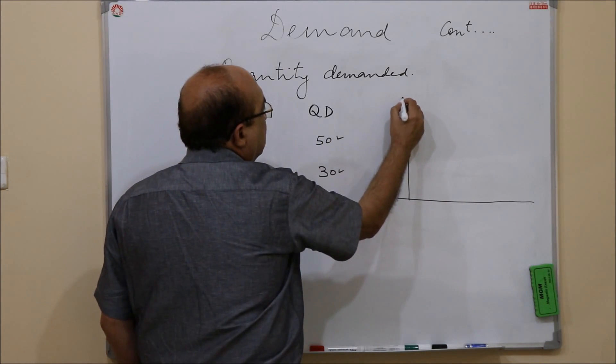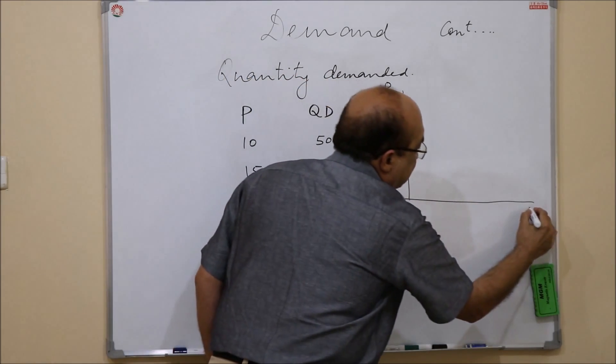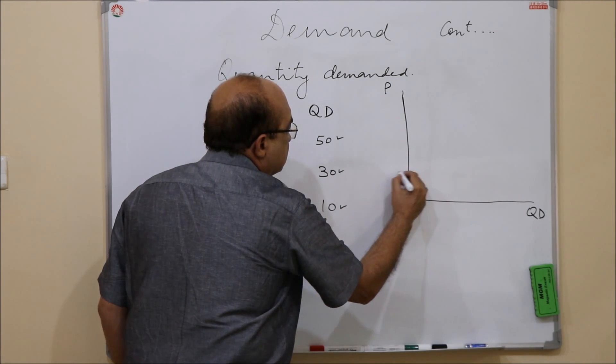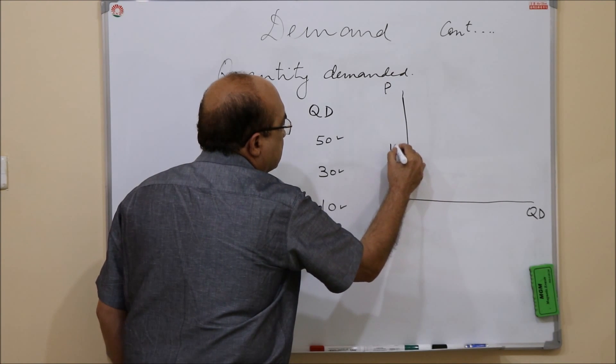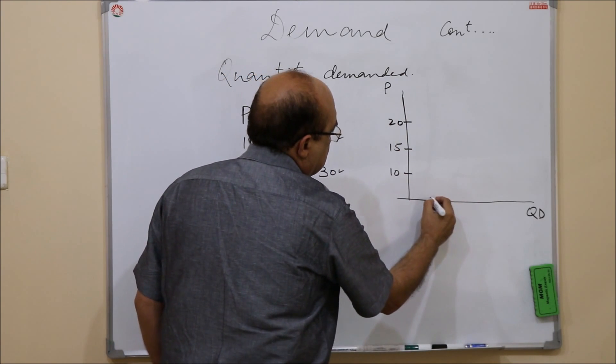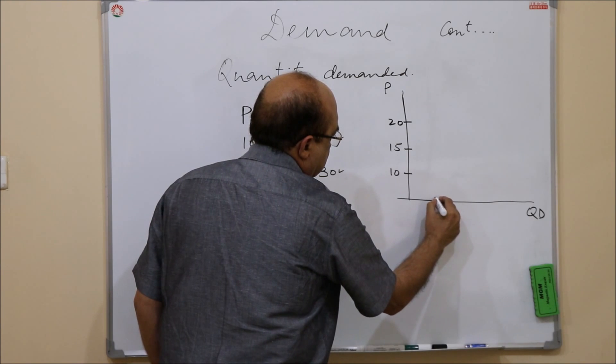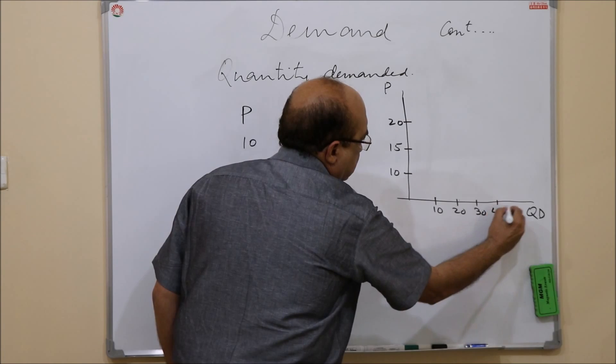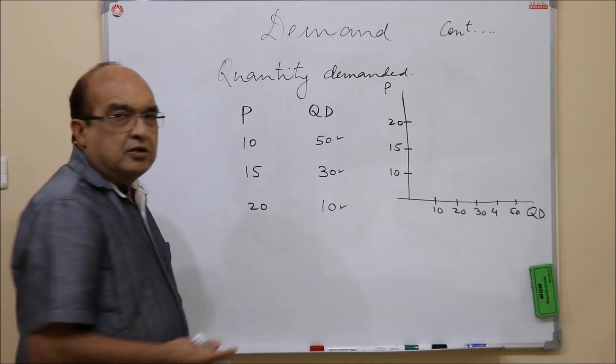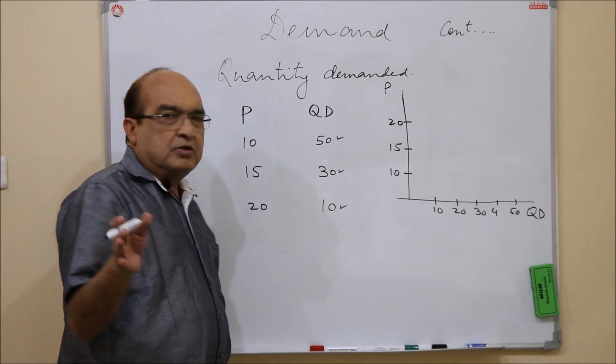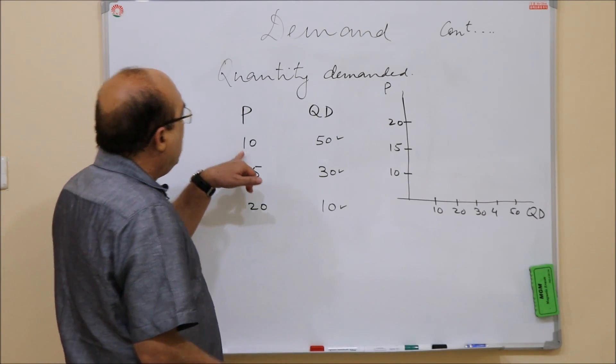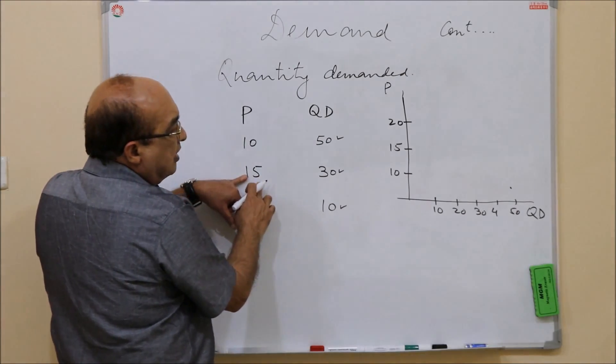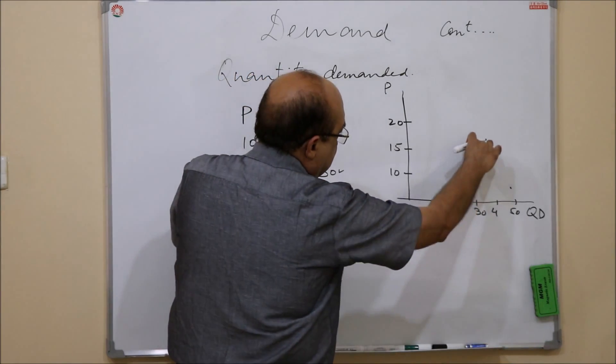Let me plot it on a graph to make it more clear. Suppose here on the y-axis we measure price and on the x-axis we measure quantity. This scale may not be drawn properly but the message could be put across. Now when the unit price was 10, 50 units were being demanded, so you get a point here. At 15 unit price, 30 units are being demanded, so you will get a point here.